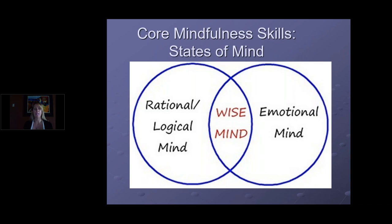The first set of skills in the core mindfulness module of DBT is the states of mind. The diagram demonstrates the three states of mind that everybody has — nobody doesn't have a wise mind, everybody has one. The clients I tend to work with typically spend a lot of time in emotion mind, but sometimes people get stuck in reasoning mind, also called rational logical mind.